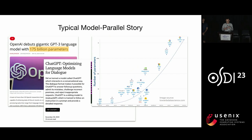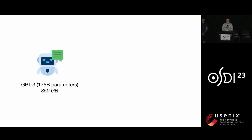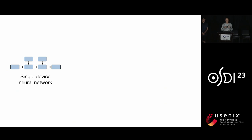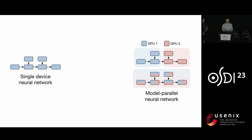From a more global perspective, we can see that people are still trying to use larger and larger models. The GPT-3 model has 175 billion parameters, meaning that its parameters take 350 gigabytes of memory. However, the most popular accelerators you can get right now still only have 40 to 80 gigabytes of memory. The size of GPT-3 is significantly larger than the size of a single accelerator. Therefore, we need to transform the way we run deep neural networks from putting everything onto a single GPU to a distributed model parallel version.